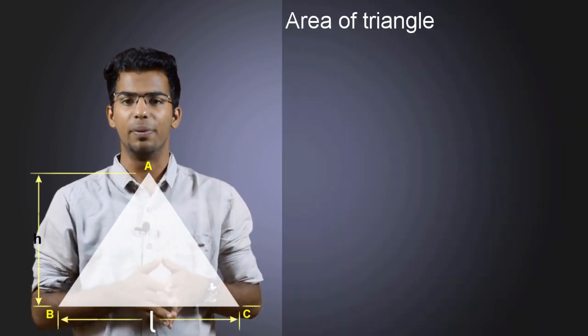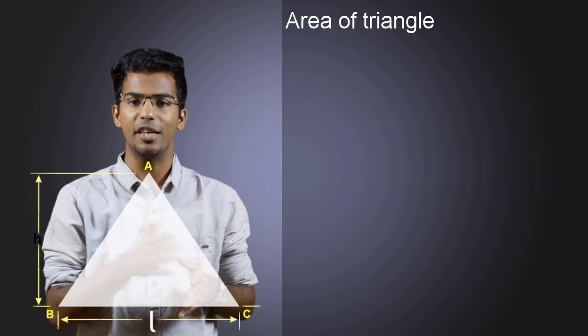As we saw in the last video, it is very important to find the centroid of simple shapes. In this video, we will be discussing the centroid of a triangle. We have a regular triangle here. It has a base length of L and a height of H. The area of this triangle will be half times base times height.